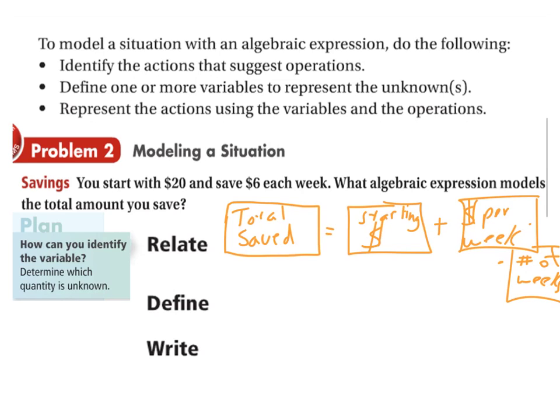And then we define the different pieces that we have. The amount that we saved, we don't know exactly what that is, I'm just going to call that T. And the starting money we know was $20. The money per week we know was 6, and we don't know the number of weeks. Now I'm actually going to end up with an equation here because I'm going to have T equals 20 plus 6 times W.